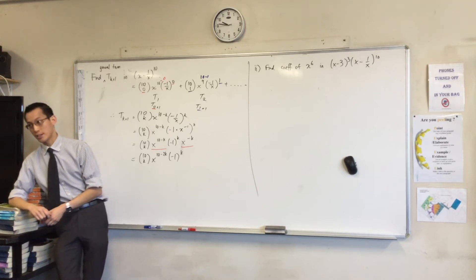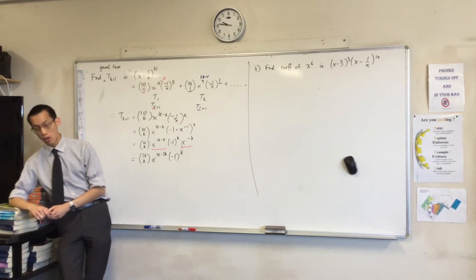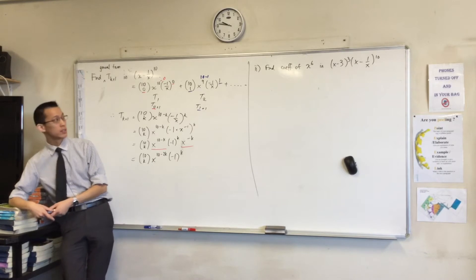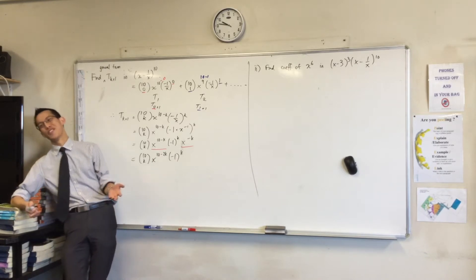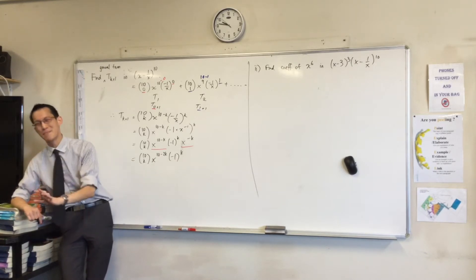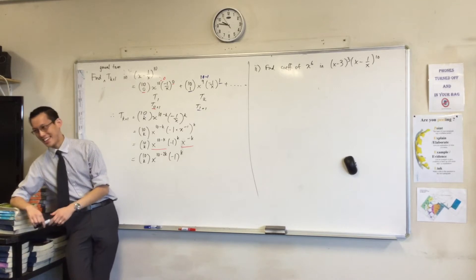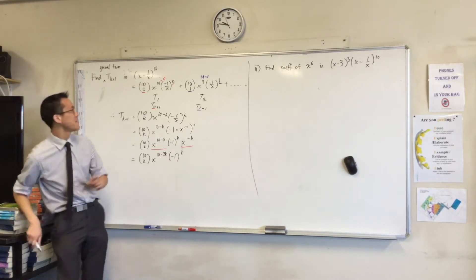You're trying to find the coefficient of x to the 6. There's a long, silly way to do this, which is I'll just expand the whole thing. Now let's just remember why that's a bad idea. You're going to have a bad time.